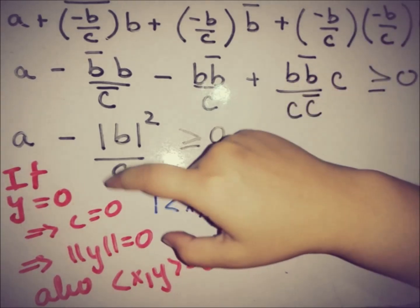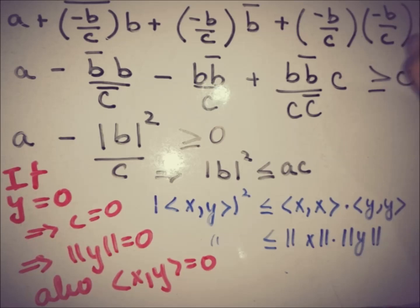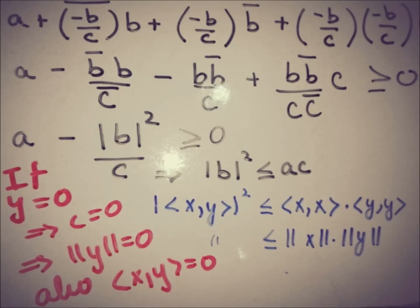To summarize: in Case 1, if both x and y are zero, the inequality holds trivially. In Case 2, if y is non-zero, we proved it using the substitution λ = −b/c. And we also verified it when y equals zero. That's all for now. Subscribe to the channel for more upcoming videos. Take care, goodbye.